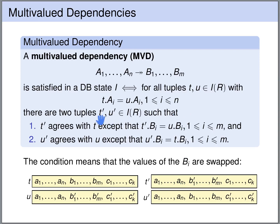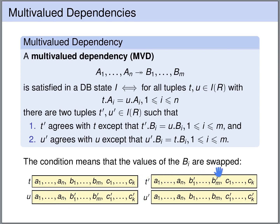This is exactly what's expressed in the formal definition: there should be tuples T' and U' in the relation such that T' agrees with T except that its B values are those of U, and U' agrees with U except that its B values are those of T. So T' and U' are basically T and U with the B values exchanged. If this holds for all tuples T and U that agree on their A values, then this multivalued dependency is satisfied in this database state.